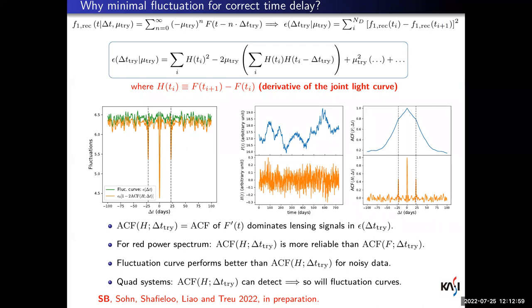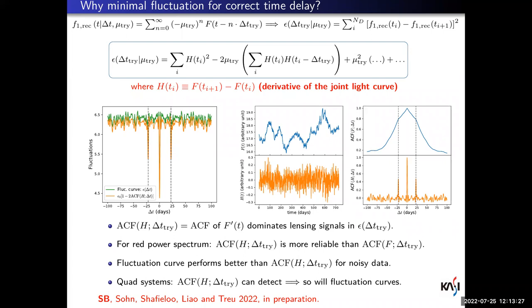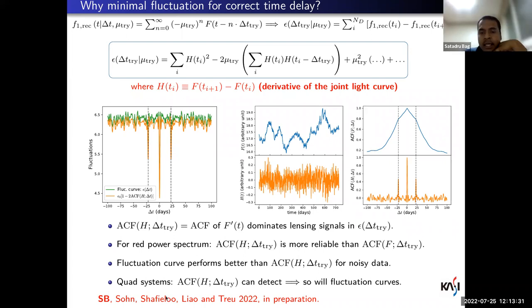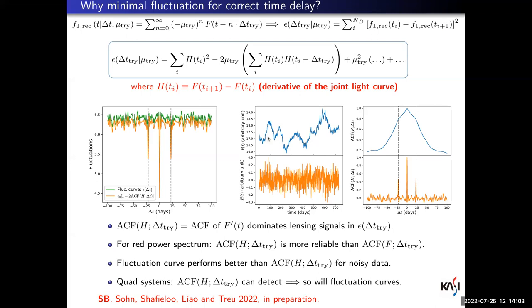Any more questions? — Yes: does your method make any assumption about the stationarity of the time series? The whole method, which explains why the fluctuation curve works, assumes that quasar flux variability is wide-sense stationary — not exactly stationary, but that its covariance properties remain the same under translation in the time domain.